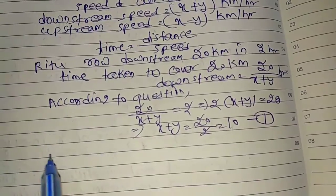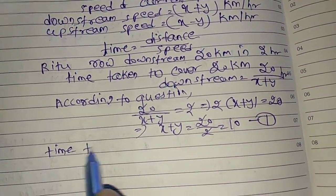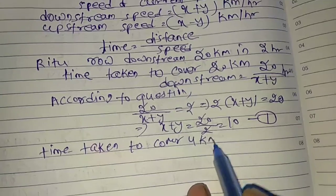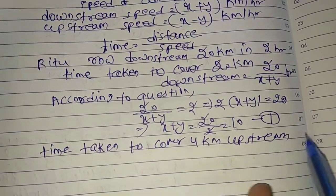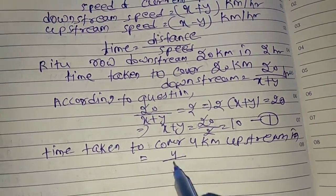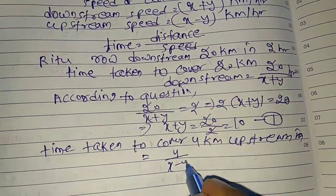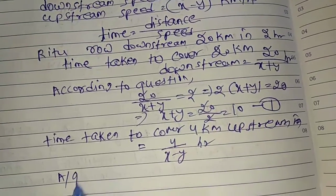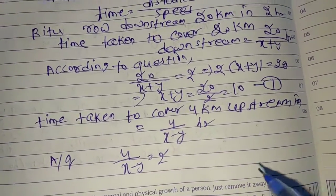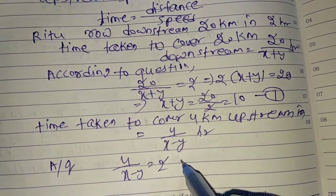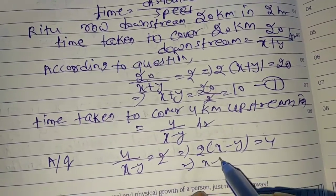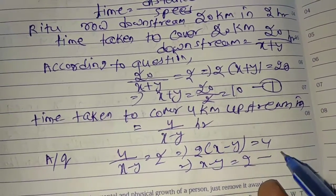Then upstream 4 km in 2 hours. Time taken to cover 4 km upstream equals 4 by upstream, x minus y, x minus y hour. According to question, this time equals to 2 hour. When we multiply, 2 into x minus y equal to 4. Then x minus y equals to 2. This is equation 2.